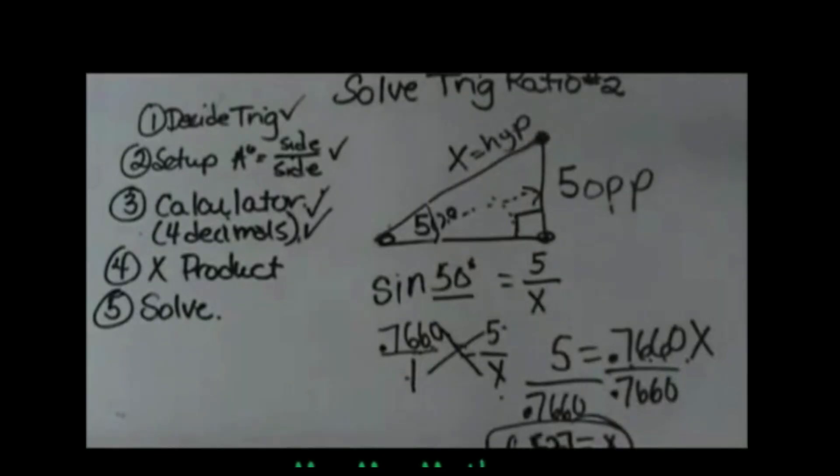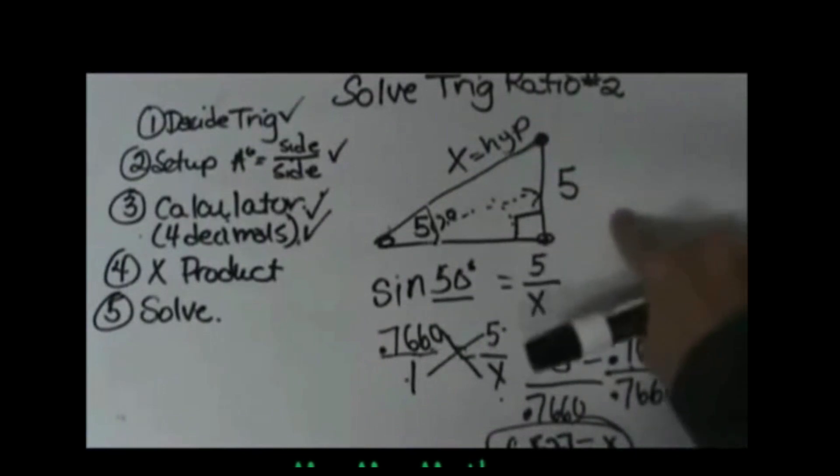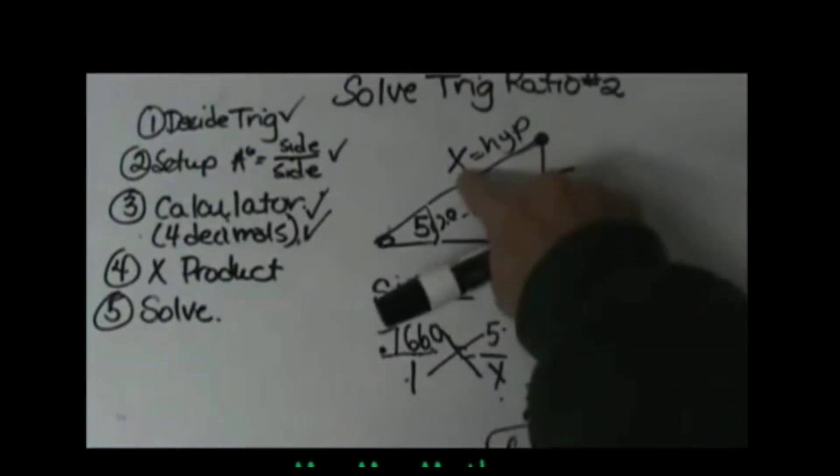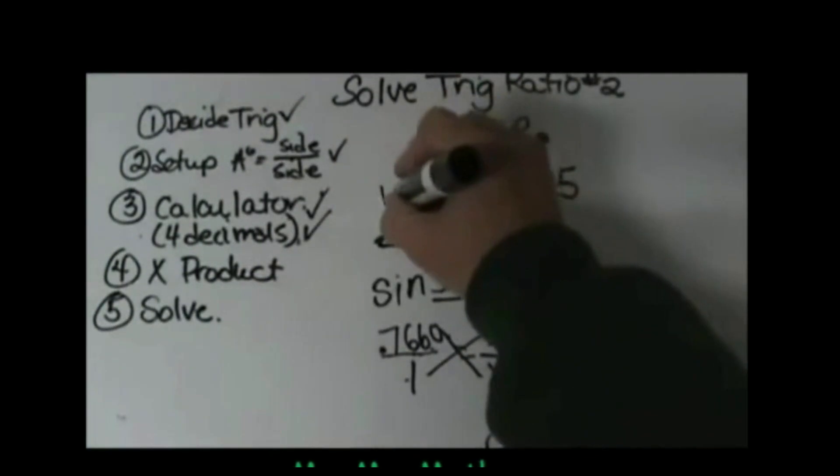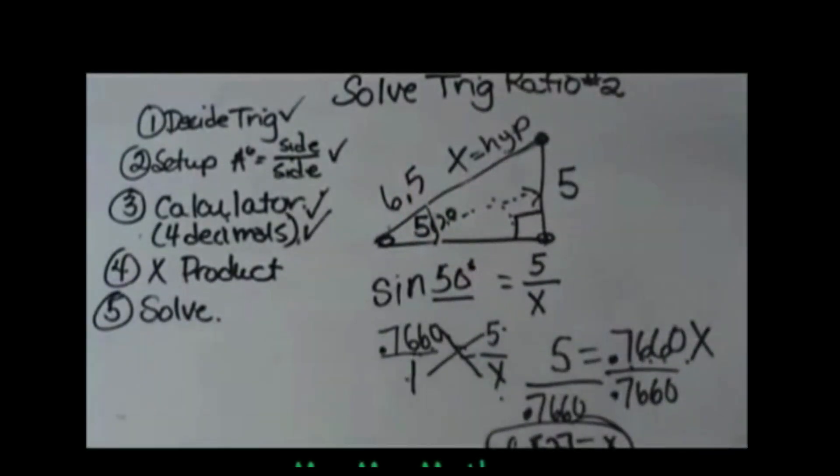Now let's see if that makes sense. Our side is the length of the side is 5. The length of the hypotenuse would be 6.5 if we round it off and that sounds correct because the hypotenuse is always the longest side of a triangle.